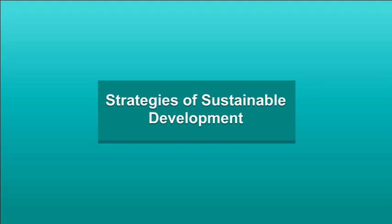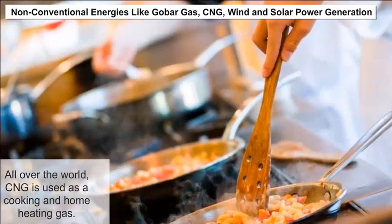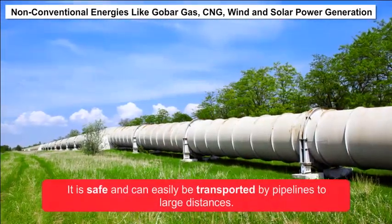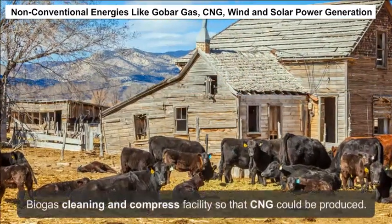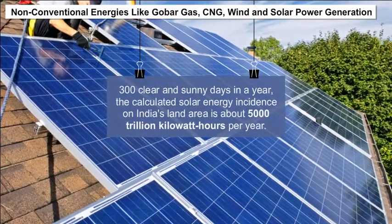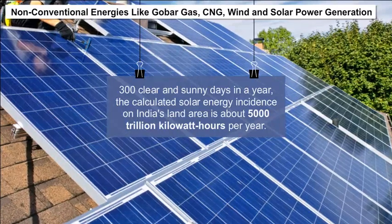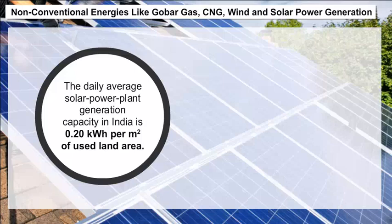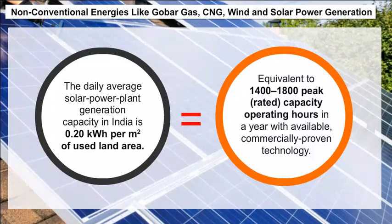Strategies of Sustainable Development: After cleaning and compressing biogas, we can make it equivalent to compressed natural gas (CNG), which is used worldwide as a cooking and home heating gas. It is safe and can easily be transported by pipelines over large distances. In India, cattle sheds can have biogas cleaning and compression facilities to produce CNG. With about 300 clear and sunny days a year, the calculated solar energy incidence on India's land area is about 5,000 trillion kilowatt-hours per year, with a daily average solar power plant generation capacity of 0.20 kilowatt per square meter.